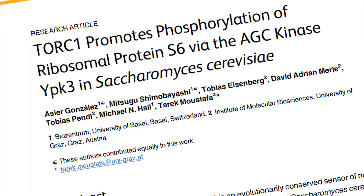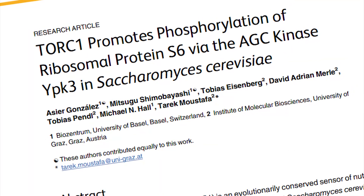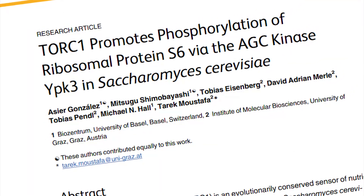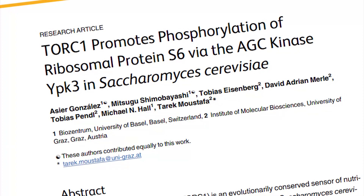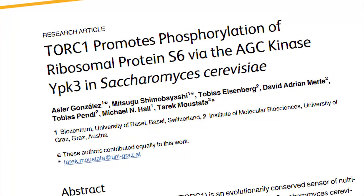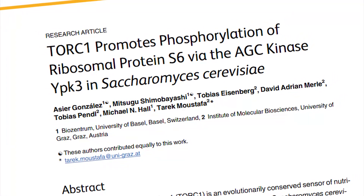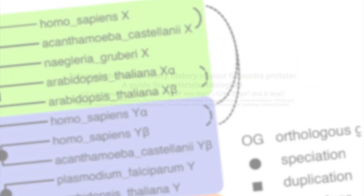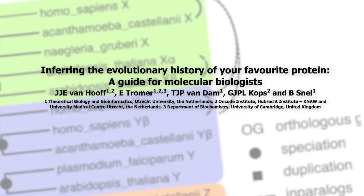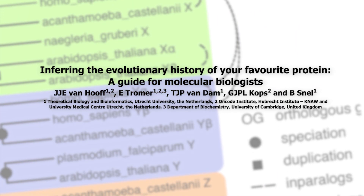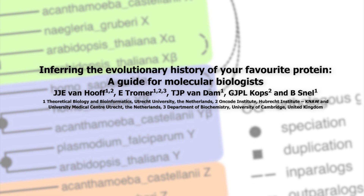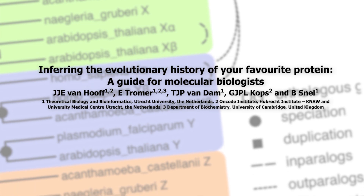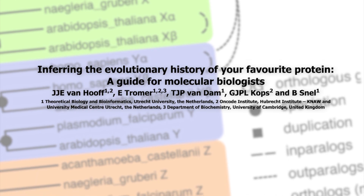And indeed, our finding was picked up by yeast Tor kinase experts and experimentally confirmed YAK as the S6K ortholog, although it is now called YPK3. We argue this method does not only reveal the evolutionary history of proteins, but can also reveal what your favorite proteins do.